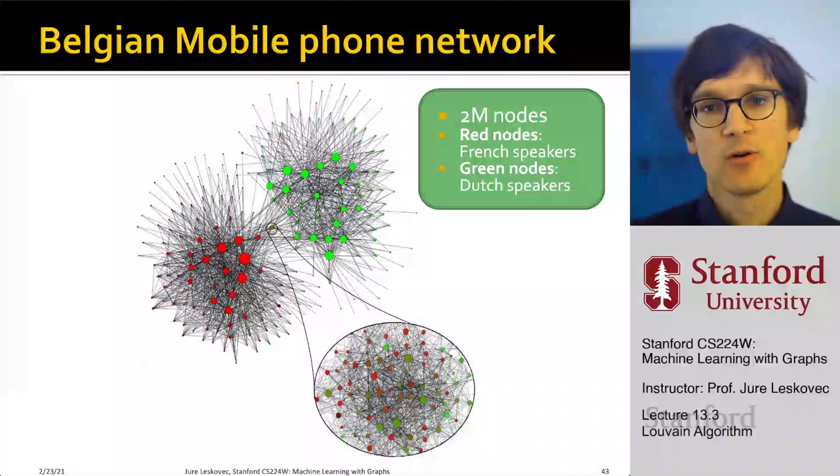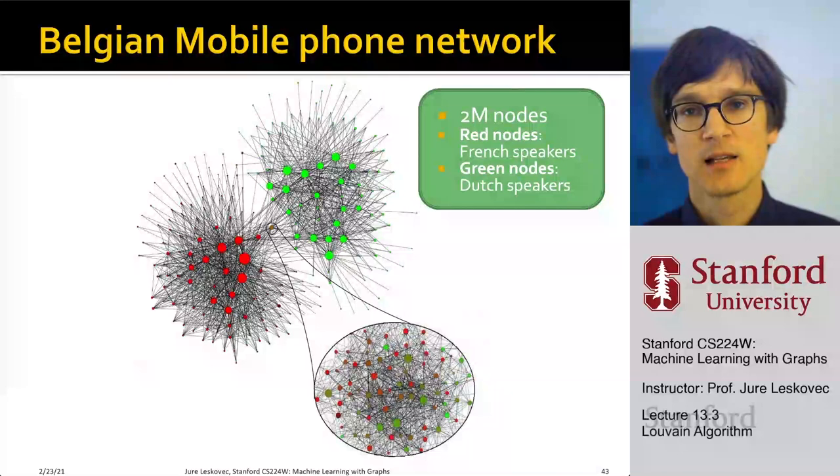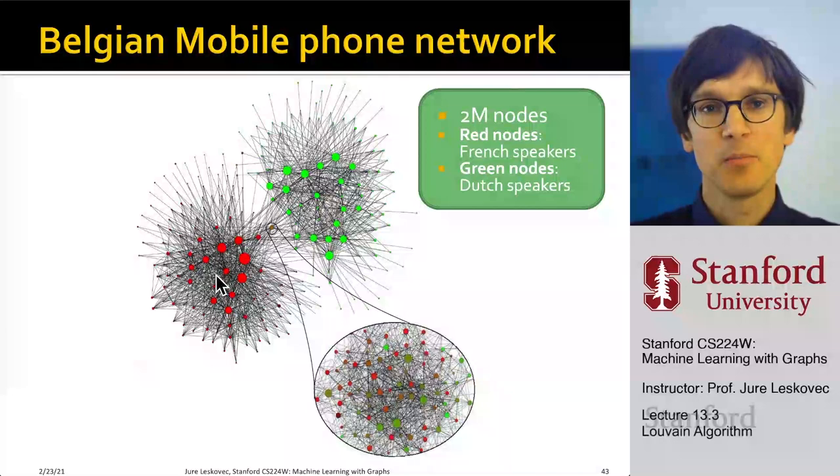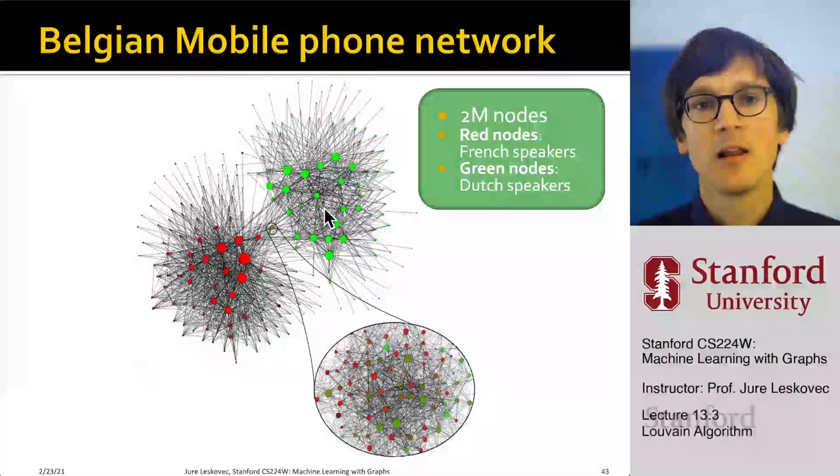As a real-world example, looking at a Belgian mobile network: Belgium has two linguistic communities — a strong French-speaking community and a strong Dutch-speaking community. If you look at the social network of phone calls, you can see very clearly how the country splits into two separate parts, where French speakers call French speakers and Dutch speakers call Dutch speakers, with relatively few connections between the two.